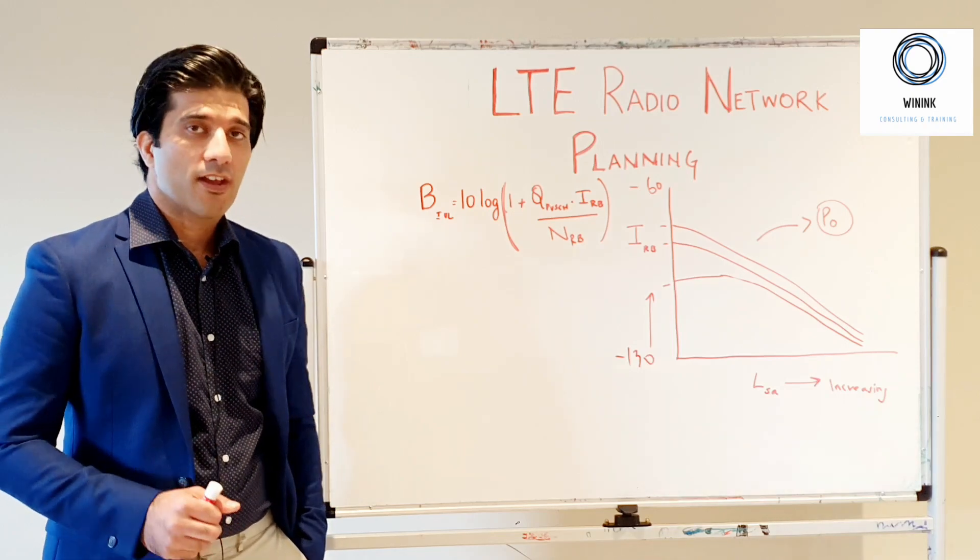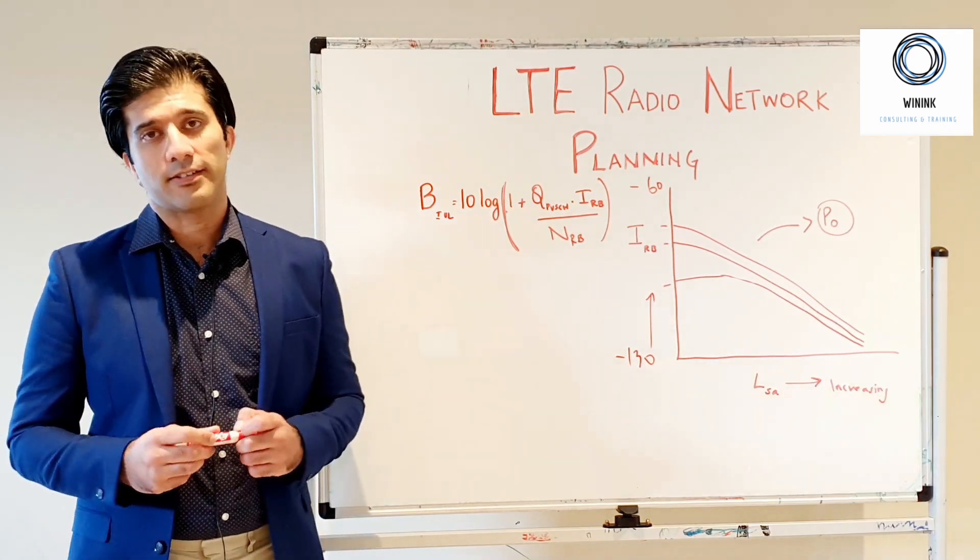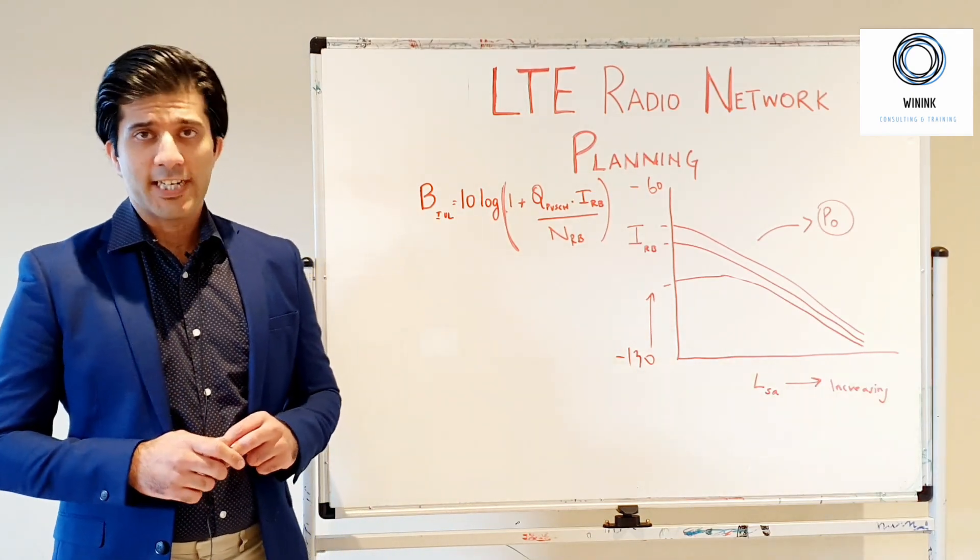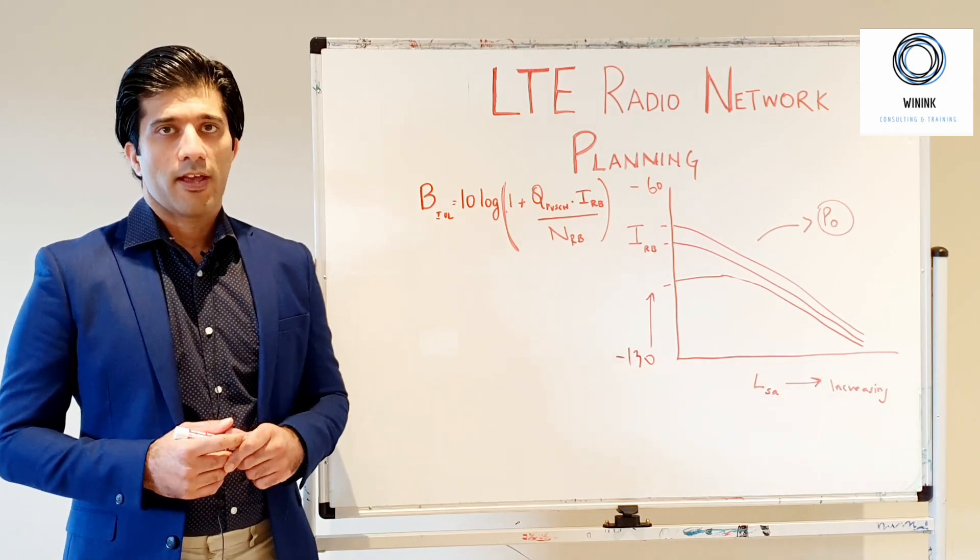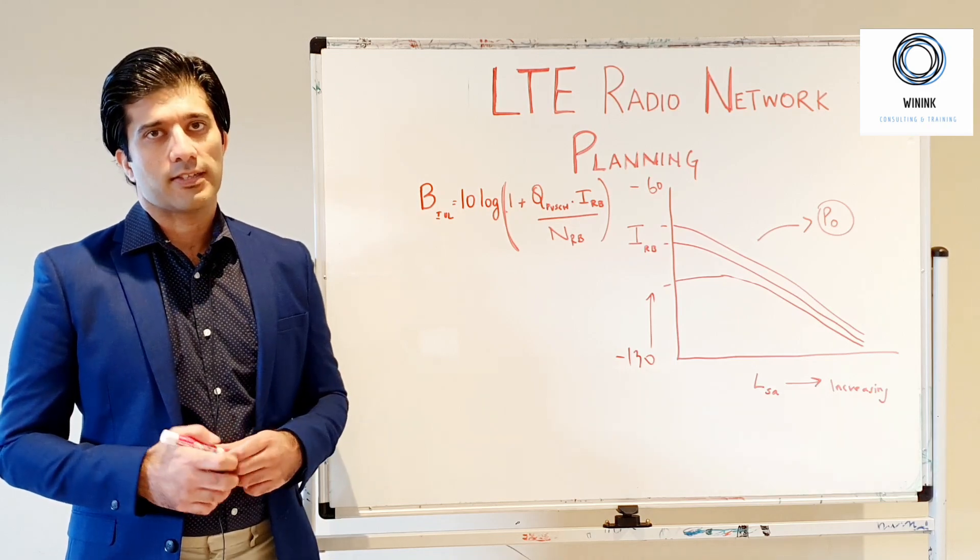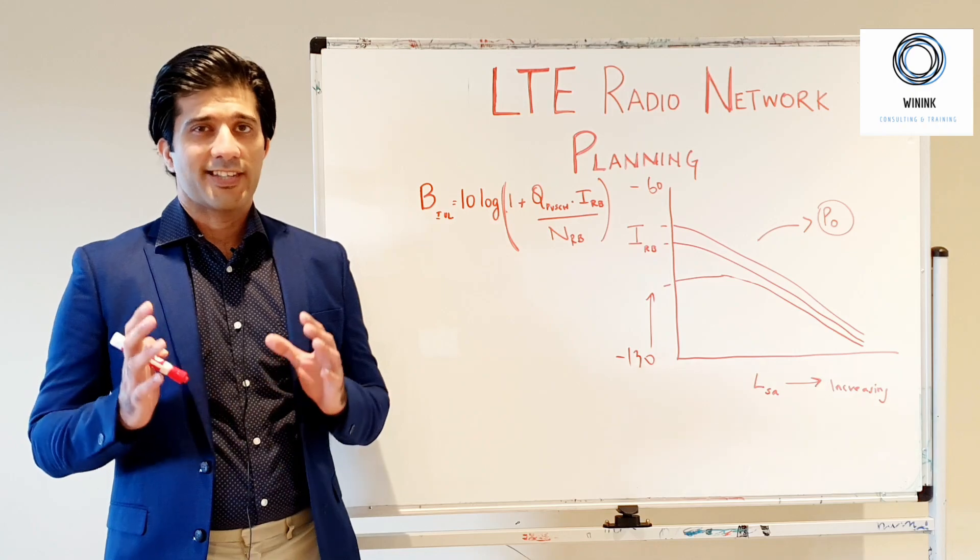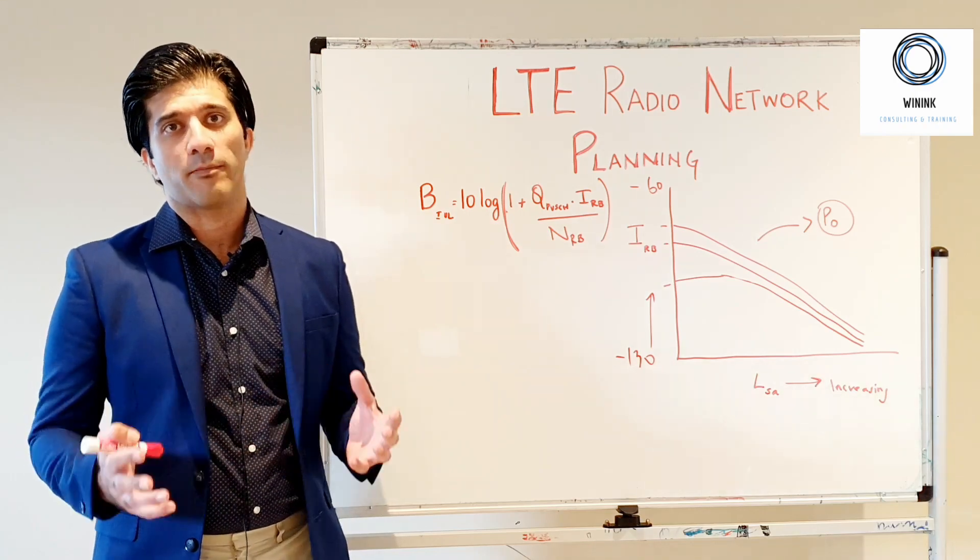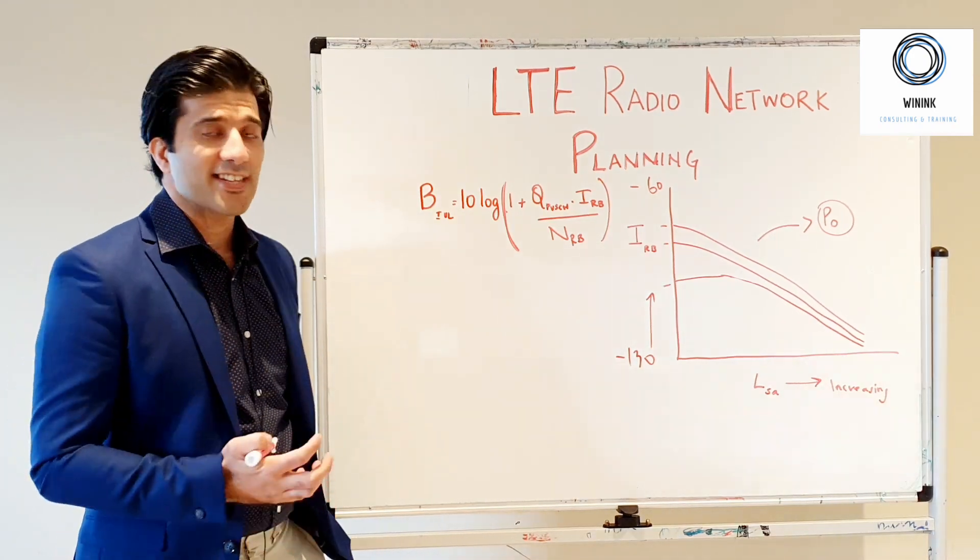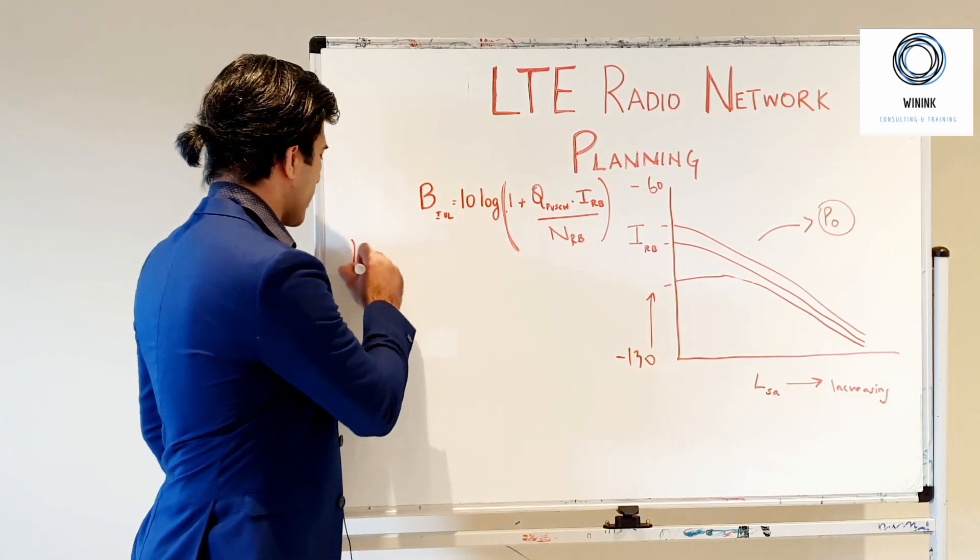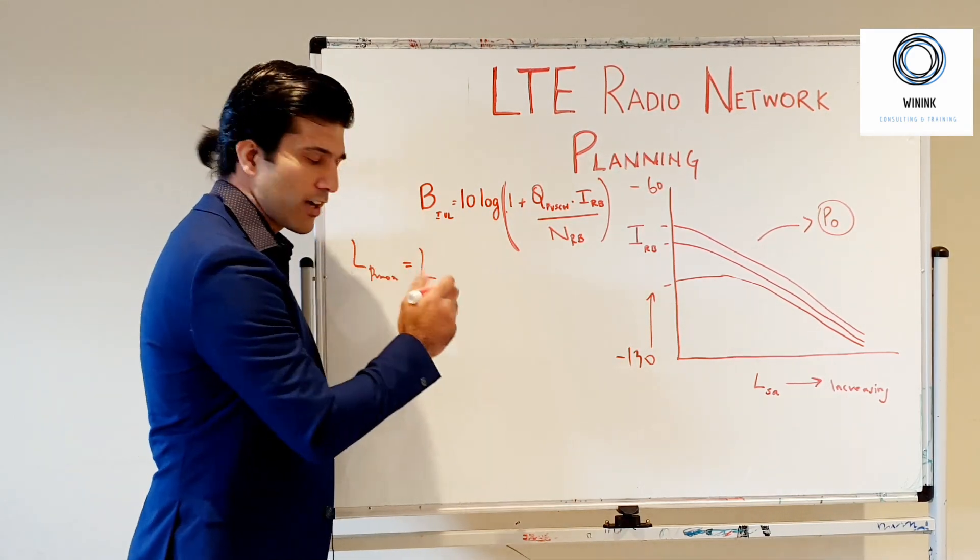What is noise rise? Noise rise basically represents your intercell interference when it comes to your link budget. When we are talking about uplink noise rise, we have this figure called B_IUL which is included as a margin figure in your link budget. When you are calculating your link budget for the maximum attenuation possible, that is your Lp_max, it will include your cell range.